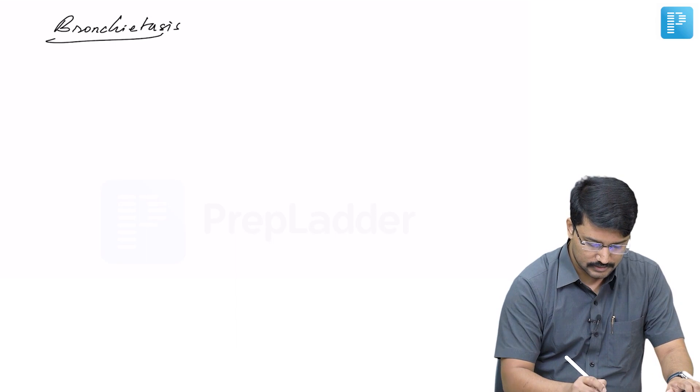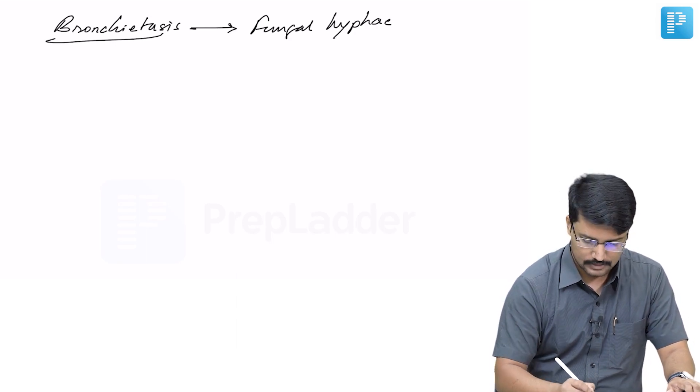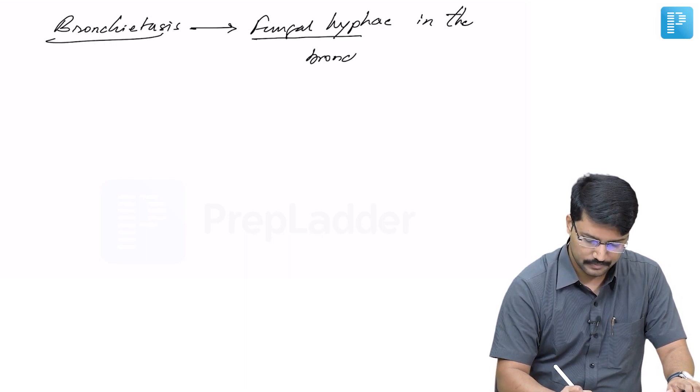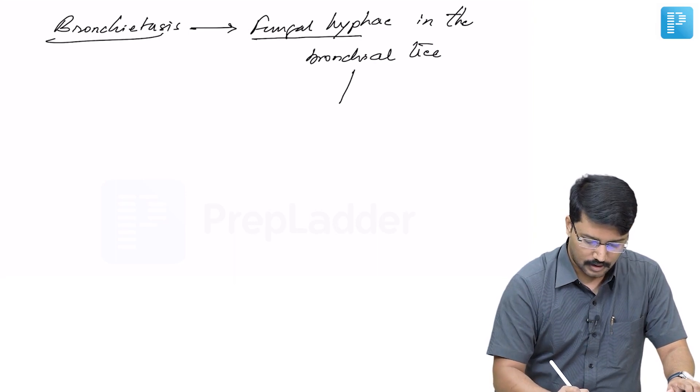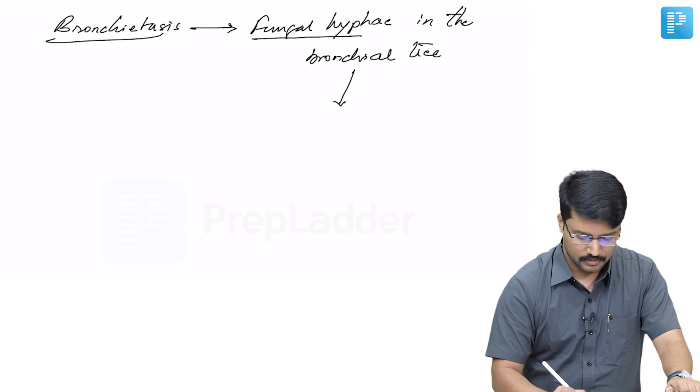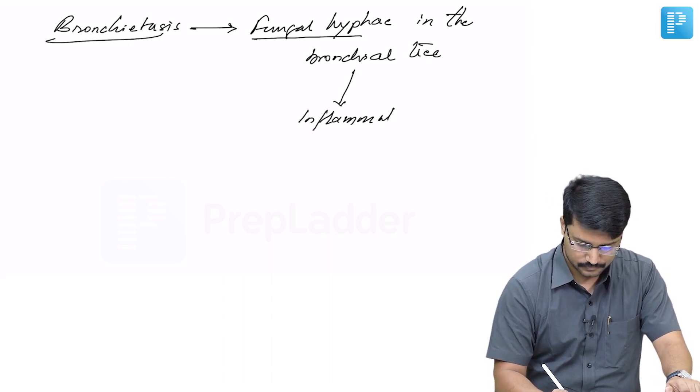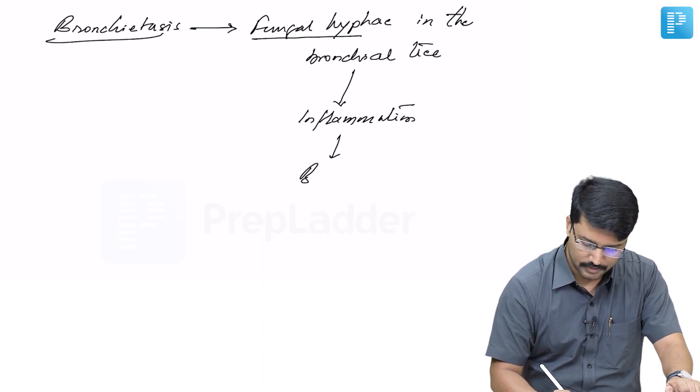This is because there is accumulation of fungal hyphae in the bronchial tree. As a response, there is inflammatory infiltration which leads to destruction of the airway wall and bronchiectasis.